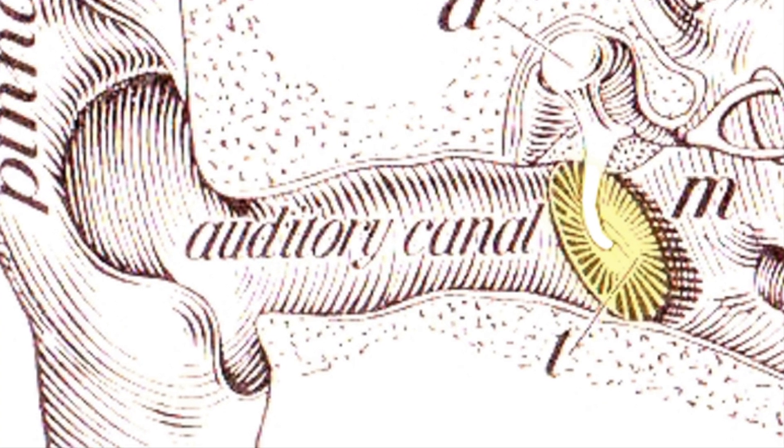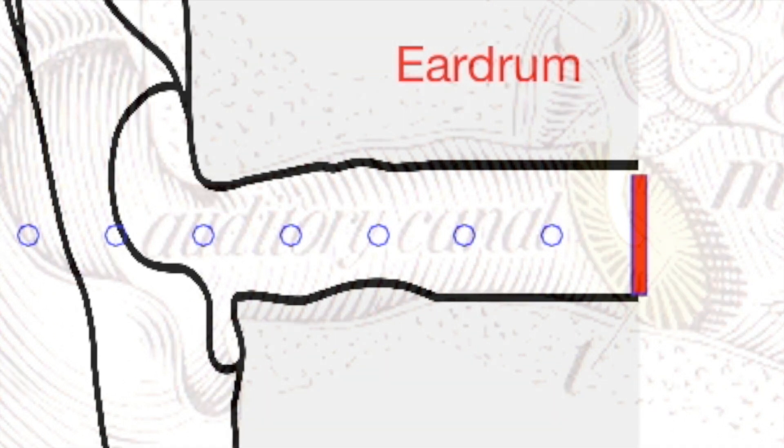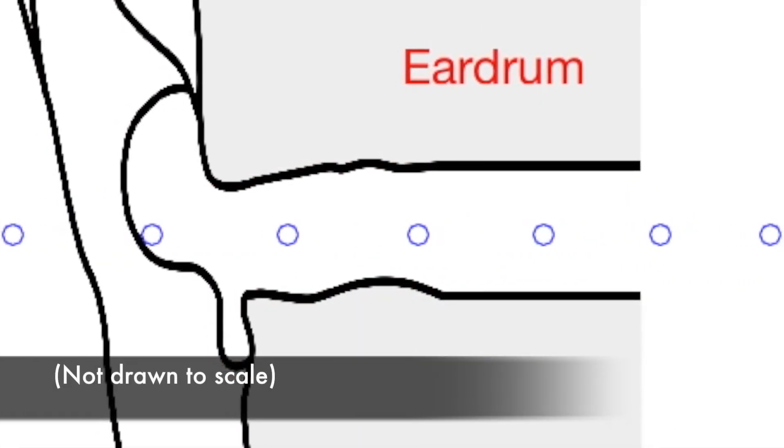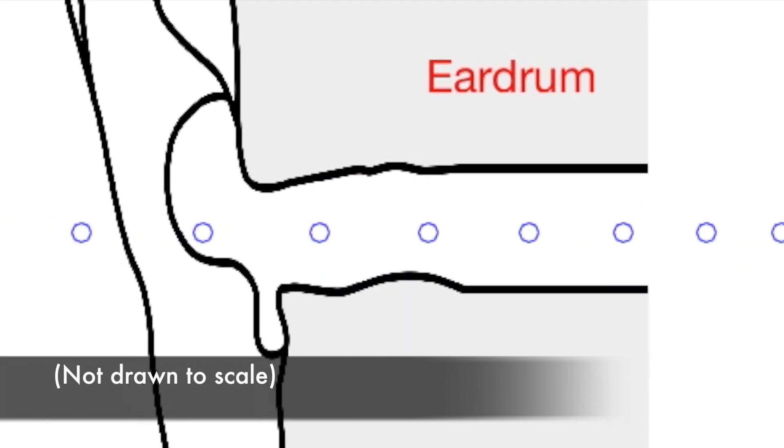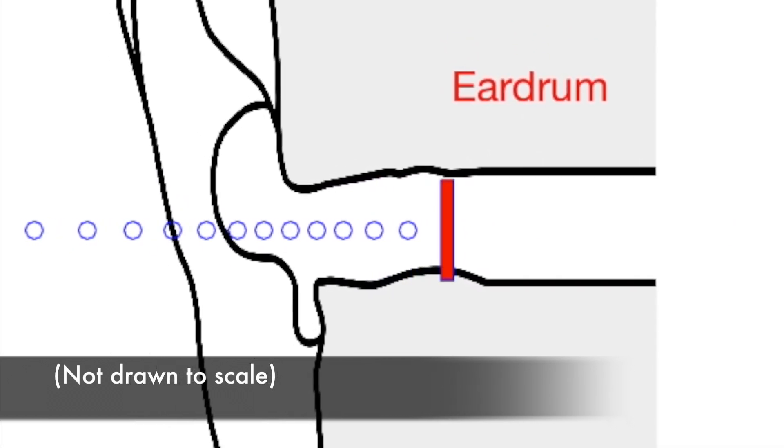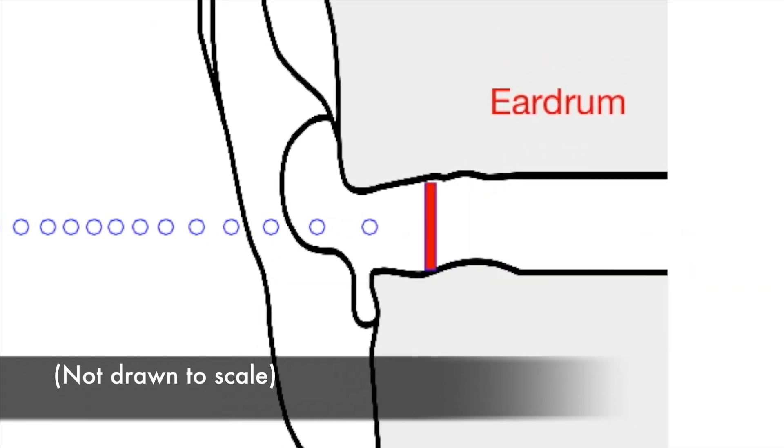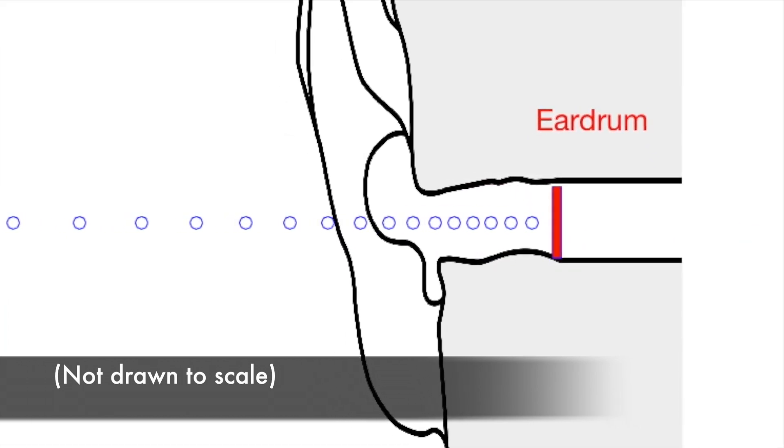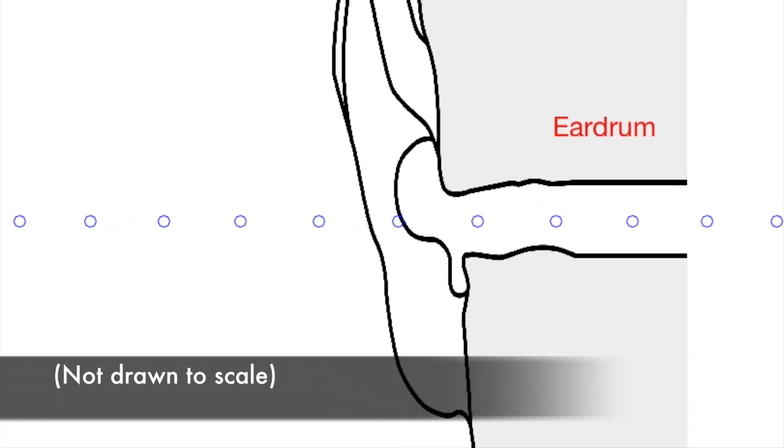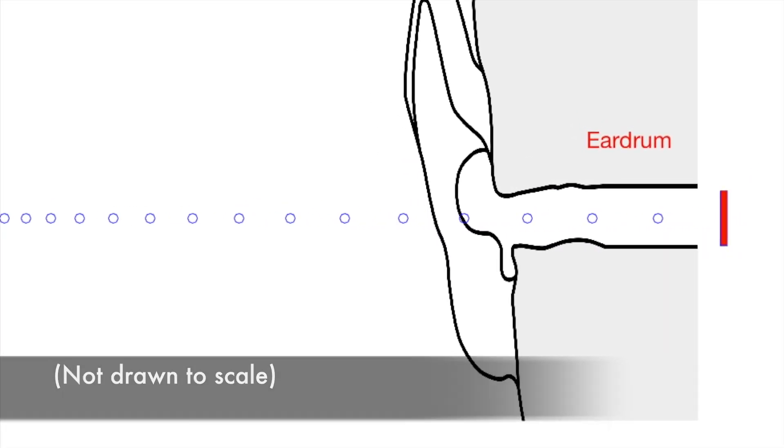That eardrum can actually move in and out of your head, just like the head of a snare drum. The eardrum is pushed in and out by the molecules that are sitting next to it, the particles of air in your ear canal. When that eardrum moves back and forth, a bunch of things happen inside your inner ear that send electrical signals to your brain. We'll concentrate on the movement of the eardrum and assume that if it moves, you can hear it.